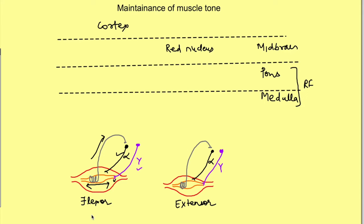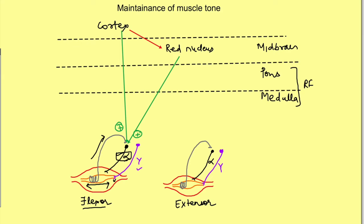The flexor muscles and extensor muscles receive different influences. The flexor muscle alpha motor neuron receives excitatory influence from the cortex. Also, via the red nucleus, the cortex influences flexor muscles — the alpha motor neuron receives excitatory influence from the red nucleus, and the red nucleus itself receives excitatory influence from the cortex. The fibers from the red nucleus of the midbrain to the flexor muscle alpha motor neuron form the rubrospinal tract, which only descends to the thoracic spinal level, so it does not influence flexor muscles below this level.